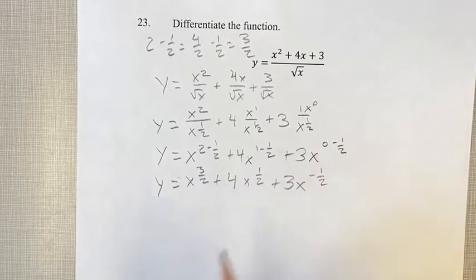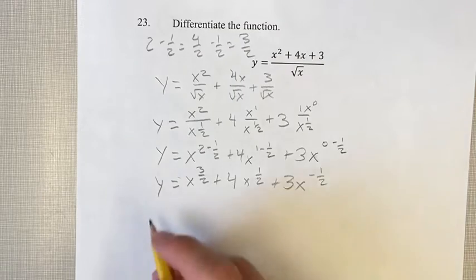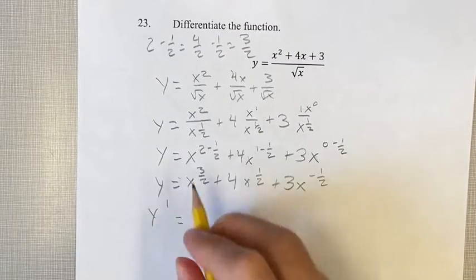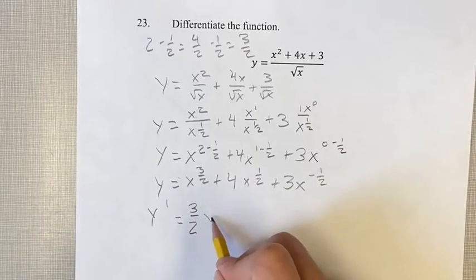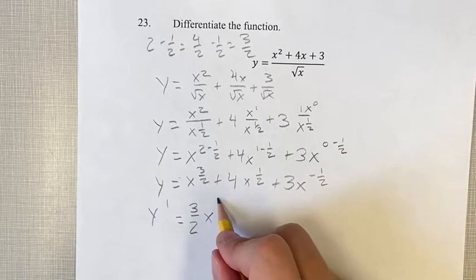Now we can find the derivatives of each of these using the power function rule. y prime, our derivative, is equal to: take the exponent, bring it down as the coefficient, and our new exponent, subtract 1 from the old one.